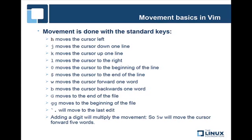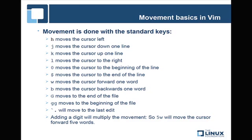Let's talk in more depth about the standard movement keys. In command mode: 'H' moves the cursor one space to the left, 'J' moves it down one line, 'K' moves it up one line, and 'L' moves it to the right — which makes sense when you look at the keyboard layout. You probably want to have your terminal open or a file open in Vim so you can follow along. To move to the beginning of a line, hit '0' (zero); to move to the end of a line, type '$'. 'W' moves the cursor forward one word, and 'B' moves it backwards one word.